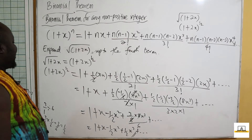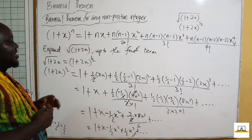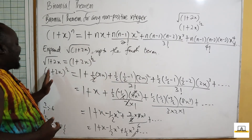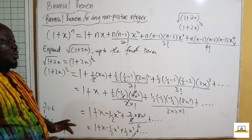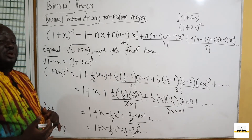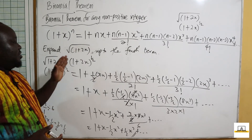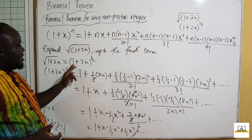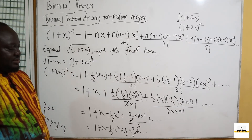So the expansion of (1+2x)^½ is 1 + x − ½x² + ½x³ + ... An important note: your first term should always be one. If the first term is not one, it is not directly possible to use this expansion until the first term becomes one.